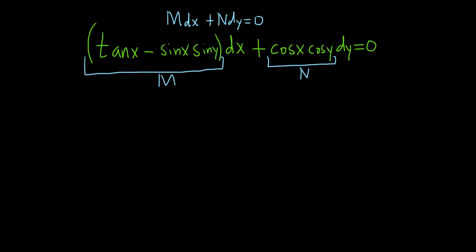This piece here will be our M and this piece will be our N. To check if it's exact, compute ∂M/∂y. The trick to memorize this: there's an x here so you use the other variable y for this derivative. When computing ∂M/∂y, all the x's are constants, so tan(x) is constant with derivative 0. Since -sin(x) is constant and the derivative of sin is cos, we get -sin(x)cos(y).